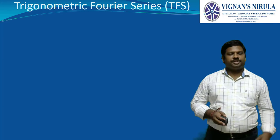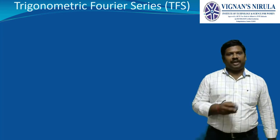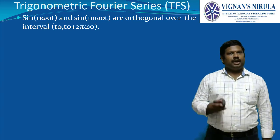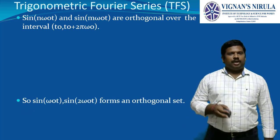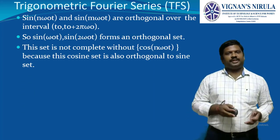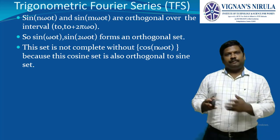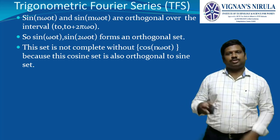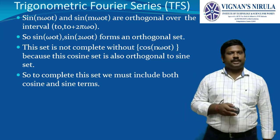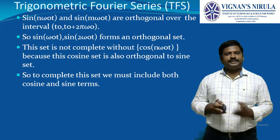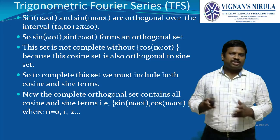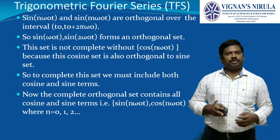For the trigonometric Fourier series, sin(nω₀t) and cos(nω₀t) are orthogonal over the interval t₀ to t₀ + 2π/ω₀. These sinusoidal functions form an orthogonal set. However, the sine set alone is not complete without including the cosine functions cos(nω₀t), since the cosine set is also orthogonal with the sine set. To form a complete set, we must include both cosine and sine terms.